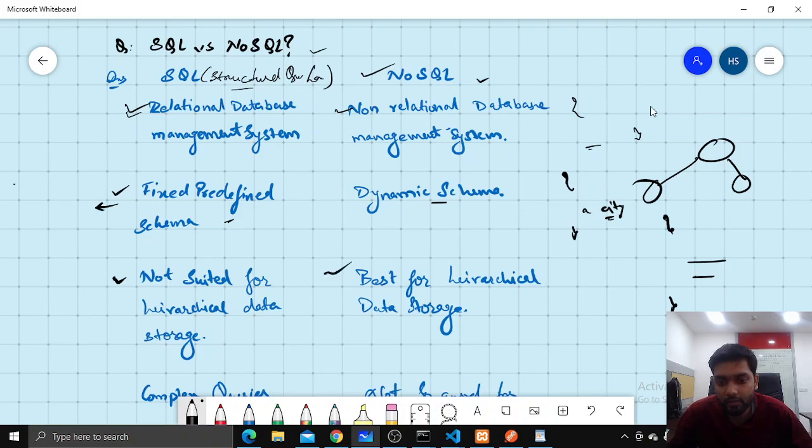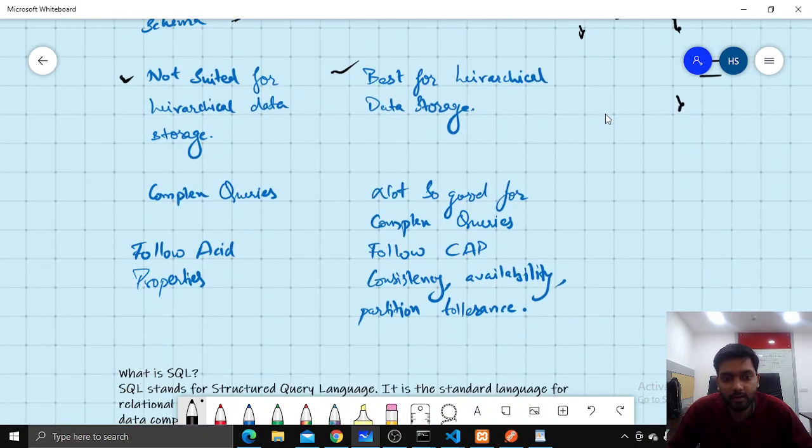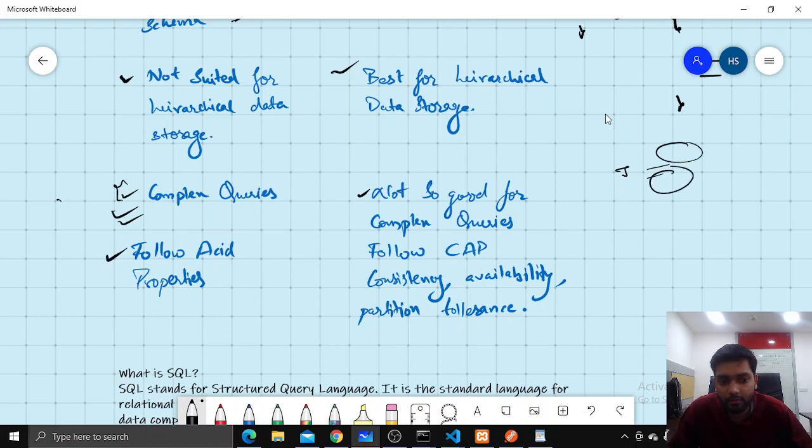Complex queries, if you want to do complex retrievals, various like joins, subqueries and such retrievals you will go with SQL databases. NoSQL is not so good for complex queries like you have to apply some clustering or grouping of data for faster retrieval.